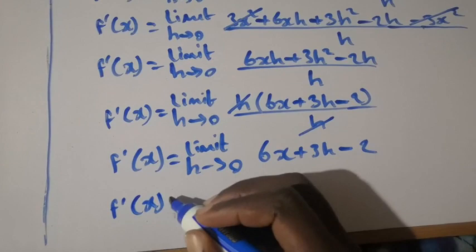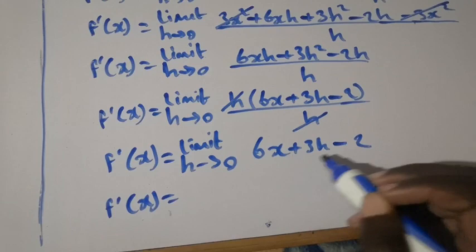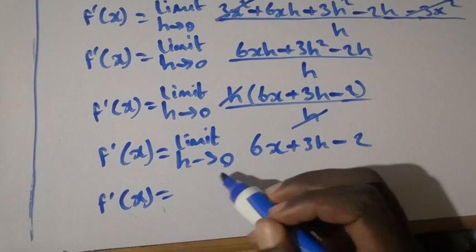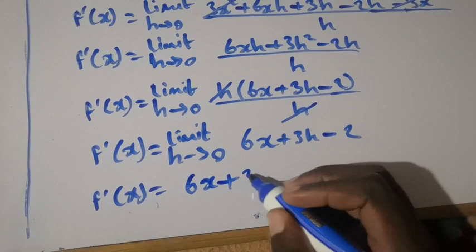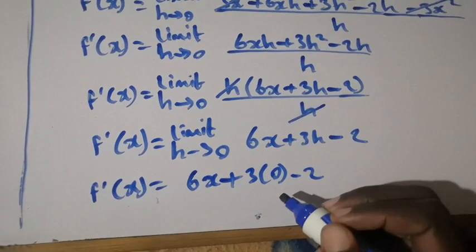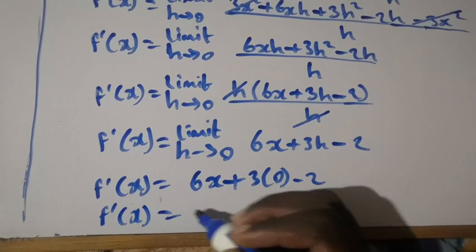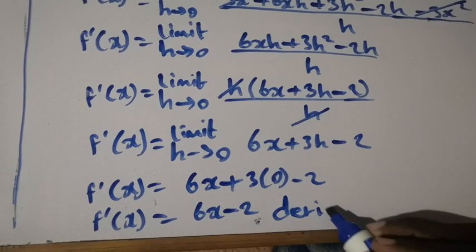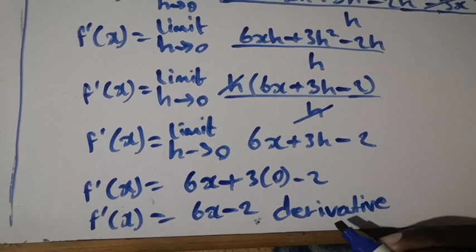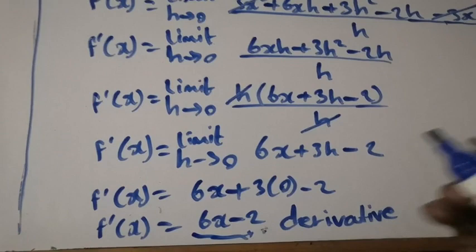So f prime of x equals — at this stage we identify any remaining h and replace it with 0. So it becomes 6x + 3(0) - 2. So f prime of x equals 6x - 2 as the derivative, or the gradient function.